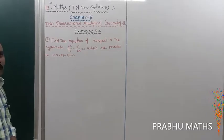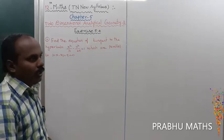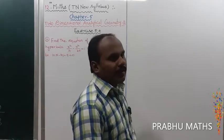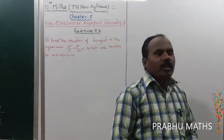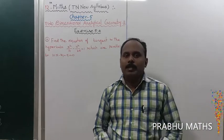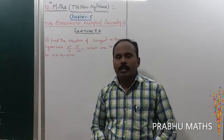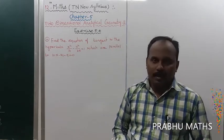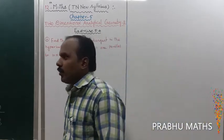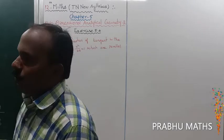For a hyperbola and ellipse, the tangent equation is y = mx ± √(a²m² + b²). That is the formula for the hyperbola.